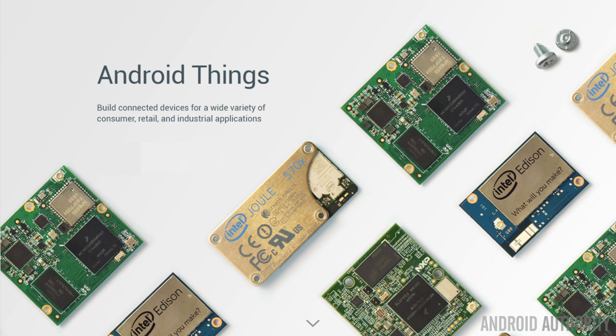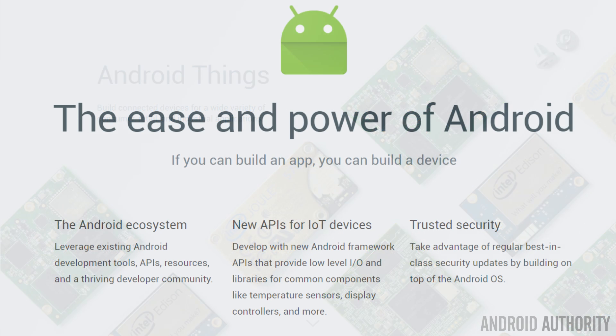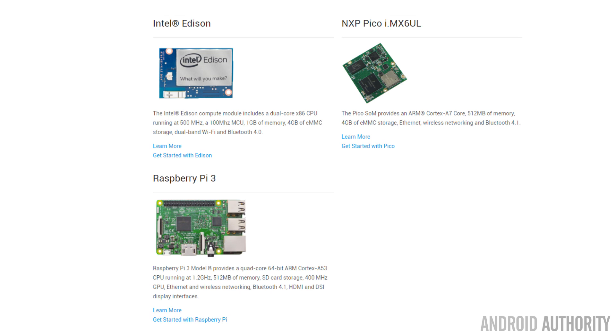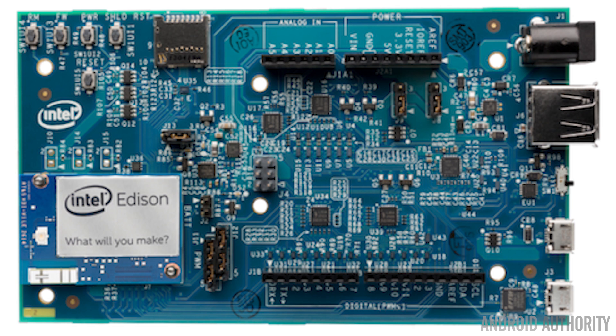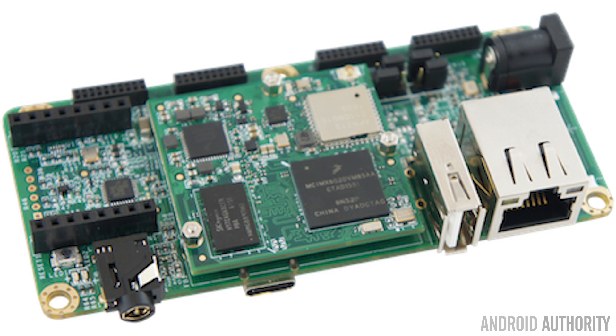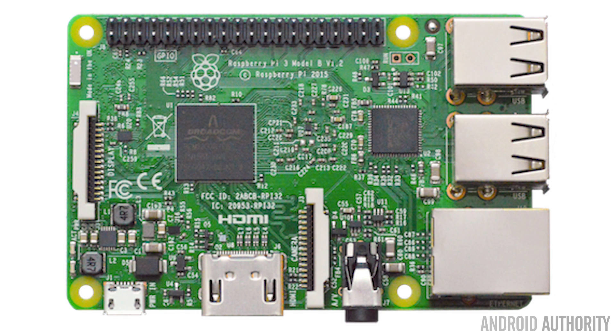Google have released Android Things with the idea that people will use the technology and knowledge built on Android and Java to build IoT devices. It has to have a hardware component, and Google have supported three boards from the start, with more coming. Those three boards are the Intel Edison, which uses an Intel x86 chip; the NXP Pico, which is an ARM Cortex-A7-based chip; and the Raspberry Pi 3, which uses a quad-core Cortex-A53 chip — that's 64-bit. So we have support for both Intel and ARM processors, and both 32-bit and 64-bit.